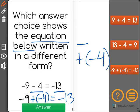And once again we'd end up with our same answer of negative 13, showing us that negative 9 plus negative 4 equals negative 13 is an equation that is the exact same as negative 9 minus 4 equals negative 13, just written in a different format.